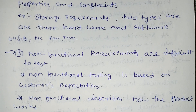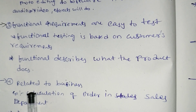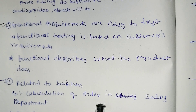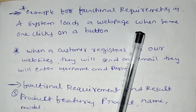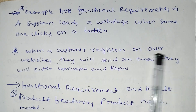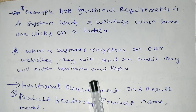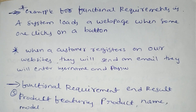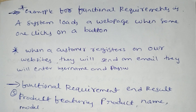The fourth difference: functional requirements are related to business calculations. For example, calculations in the sales department. For functional requirements, a system loads a webpage when someone clicks on a button, and when a customer registers on the website they will send an email and enter a username and password.